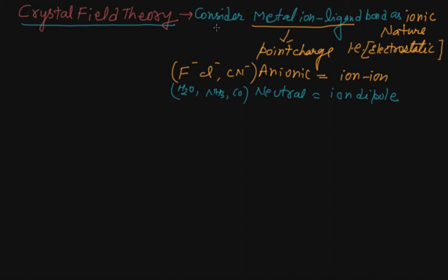It considers the metal ion-ligand bond as an ionic bond, electrostatic in nature. They consider the metal ion-ligand bond as a point charge. When the ligand is anionic like fluorine or cyanide, it is ion-ion interaction, and when it's a neutral molecule, it's ion-dipole.